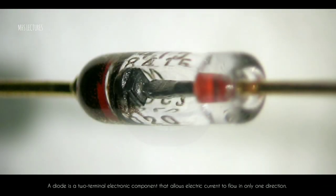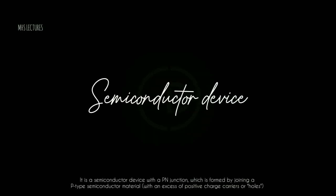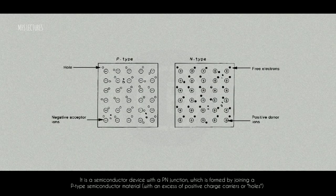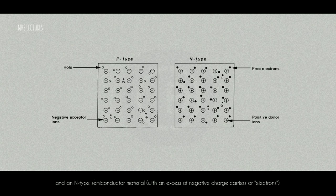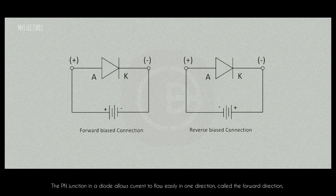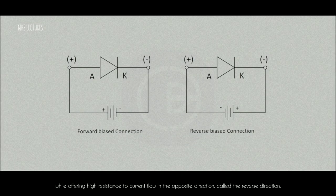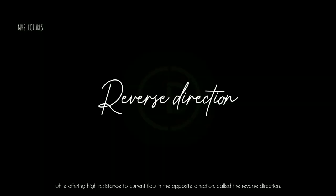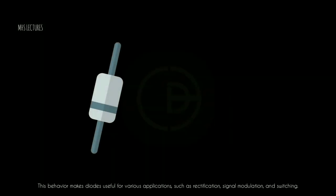A diode is a two-terminal electronic component that allows electric current to flow in only one direction. It is a semiconductor device with a P-N junction, formed by joining a P-type semiconductor material, with an excess of positive charge carriers or holes, and an N-type semiconductor material, with an excess of negative charge carriers or electrons. The P-N junction allows current to flow easily in one direction, called the forward direction, while offering high resistance in the opposite direction, called the reverse direction. This behavior makes diodes useful for applications such as rectification, signal modulation, and switching.